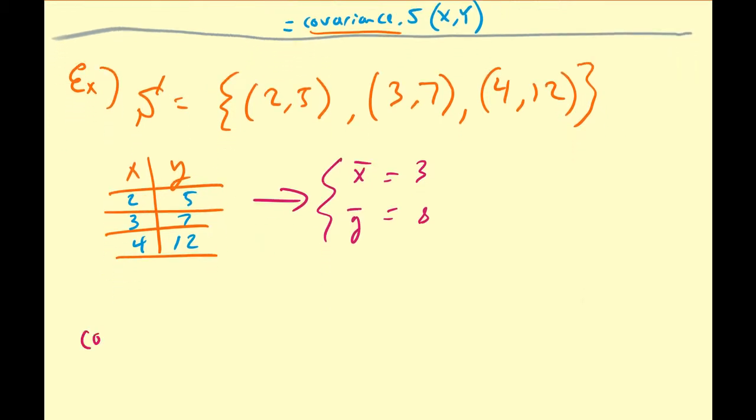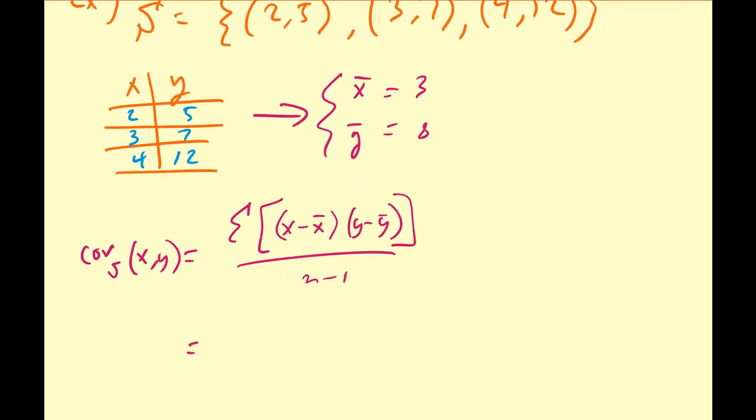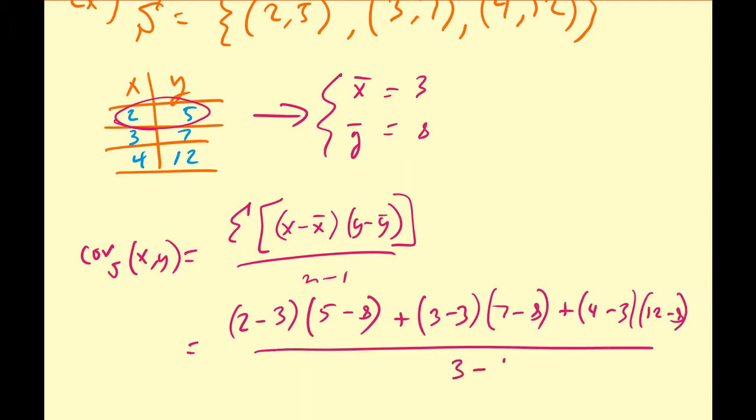Alright, so from here we can calculate our covariance. So the covariance of a data set, XY, is going to be equal to the sum of the products of the differences between X and X bar and Y minus Y bar divided by N minus 1. So for the first term, that's going to be 2 minus the mean of X, 3, times Y, which is 5, minus the mean of 8. And then plus, we'll do the same for the second. So 3 minus 3 times 7 minus 8. And then for the last one, it's going to be 4 minus 3 times 12 minus 8, all divided by 3 minus 1.